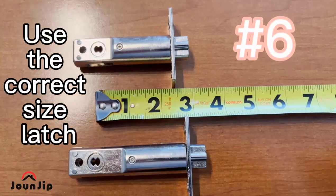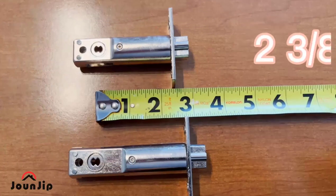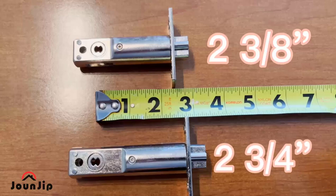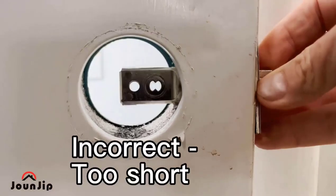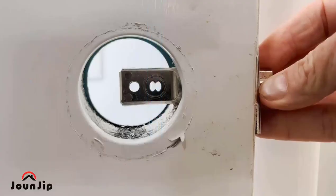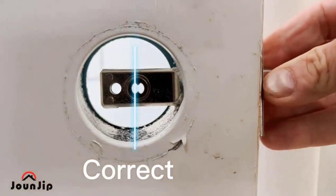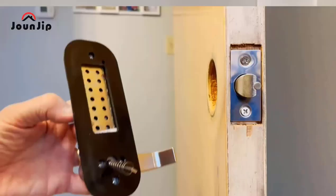Number six: use the correct size latch for your backset, either two and three eighths or two and three quarters. If the latch is too short, it will not work properly. It should line up in the middle of the borehole.